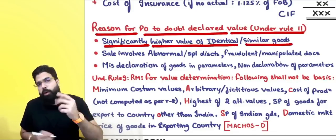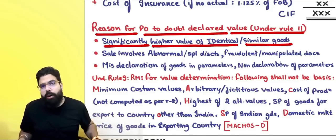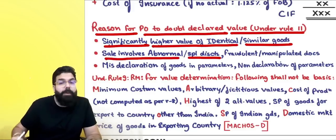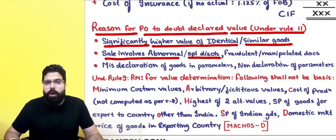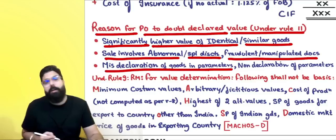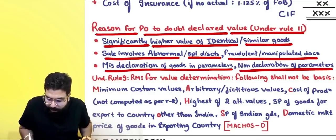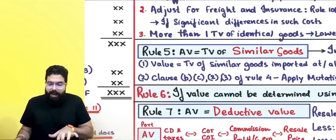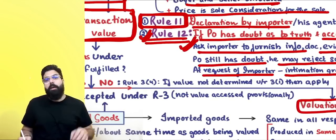Reasons for the PO to doubt the declaration under Rule 11 include: significantly higher value of identical or similar goods — for example, if identical goods are coming into India at $1000 but you declared $100. Also: abnormal or special discounts, fraudulent or manipulated documents, misdeclaration of goods parameters, or non-declaration of parameters. In such cases, under Rule 12, the officer will reject the declared value and do reassessment by applying valuation rules.